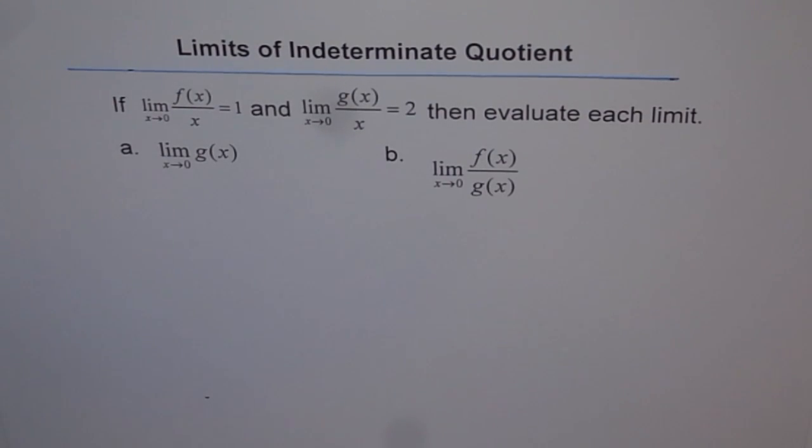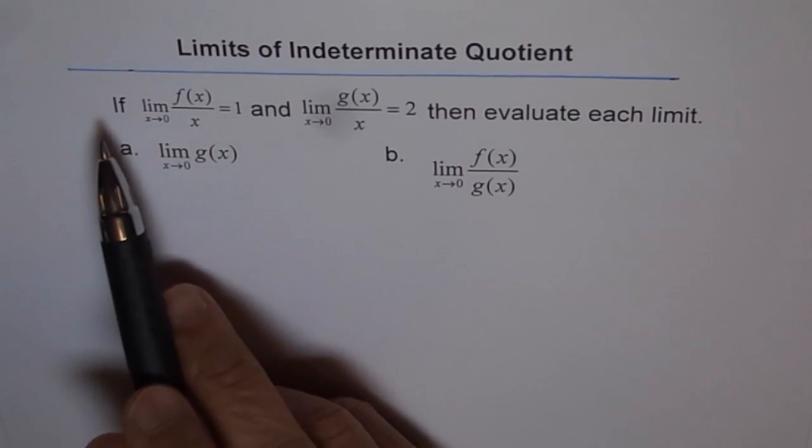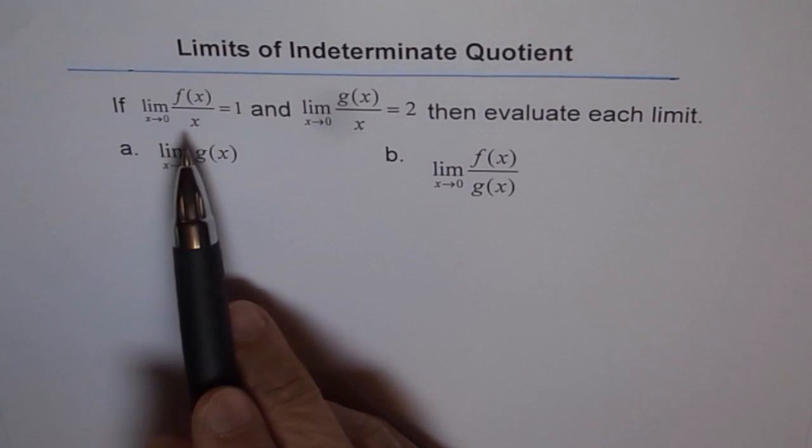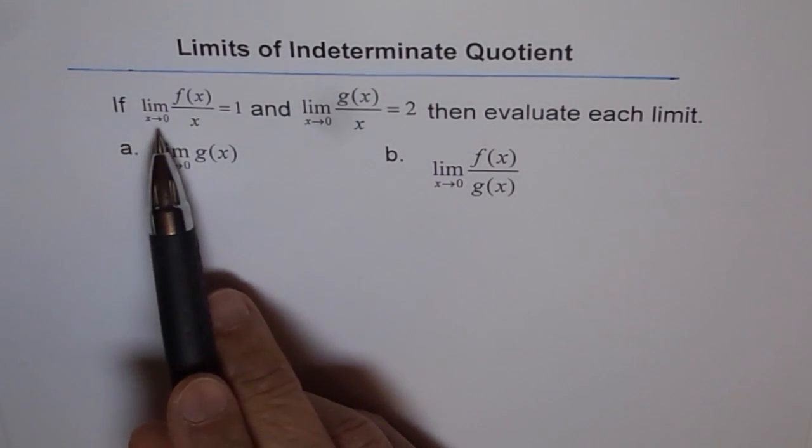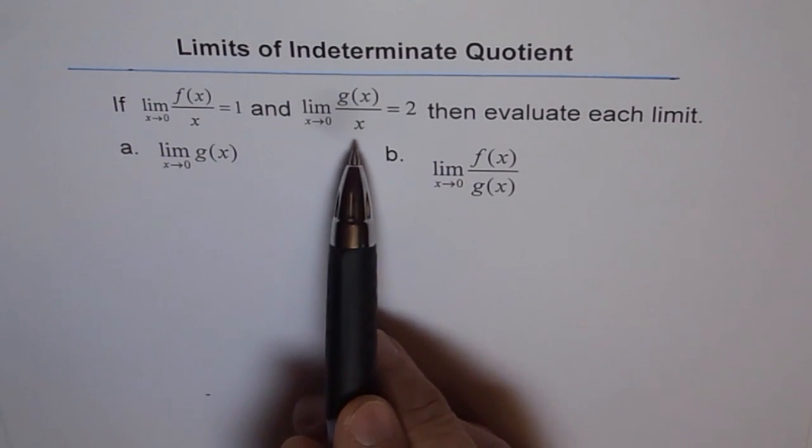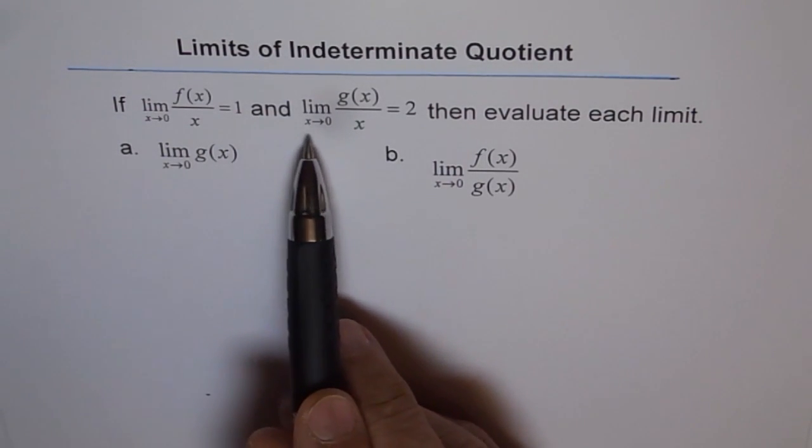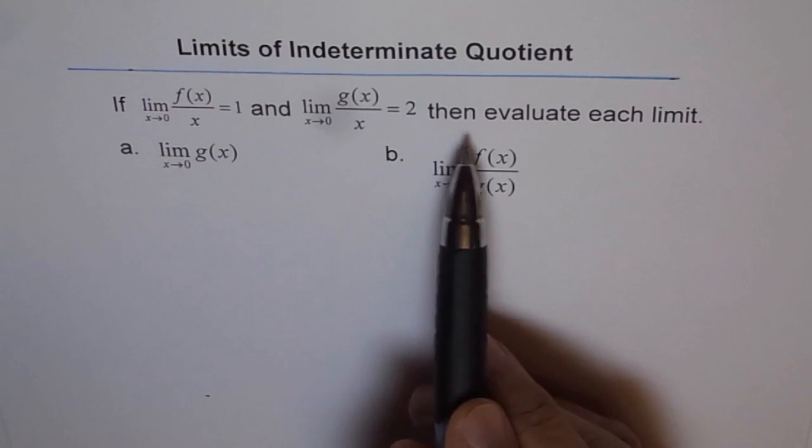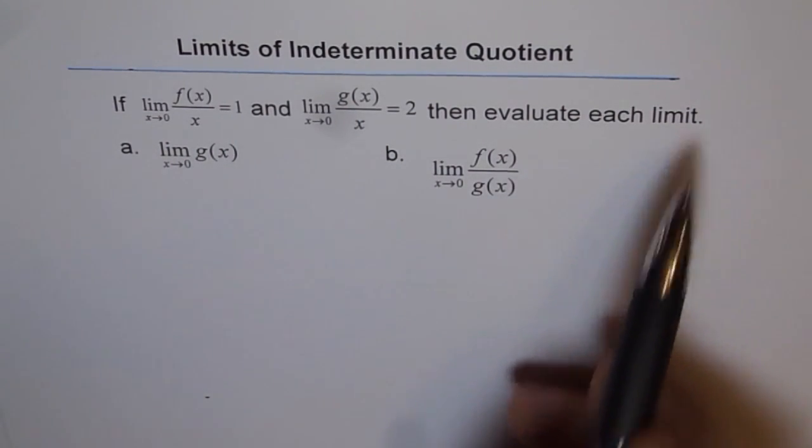Here is a thinking problem for you. If limit of f of x over x where x approaches 0 is equal to 1 and limit of g of x over x where x approaches 0 is 2, then evaluate each limit.